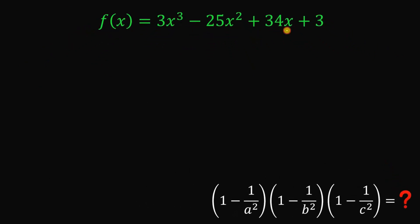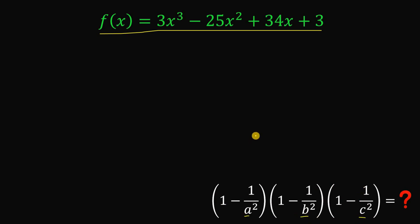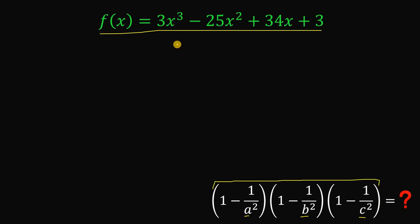Given this function with roots a, b, and c, the goal is to find the numerical value of (1 - 1/a²)(1 - 1/b²)(1 - 1/c²). To answer this kind of question, we don't need to find the individual values of a, b, and c and substitute them. So how do we find the value of this expression without finding the roots?